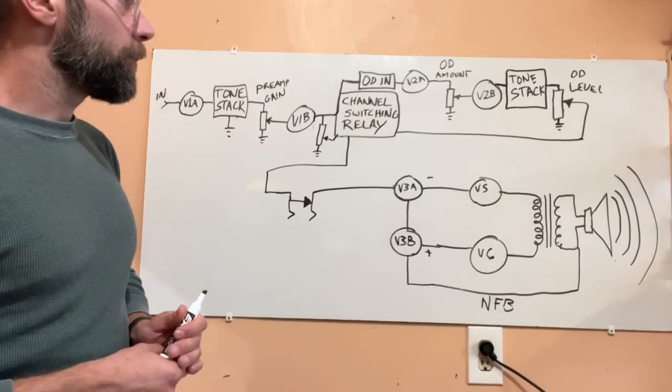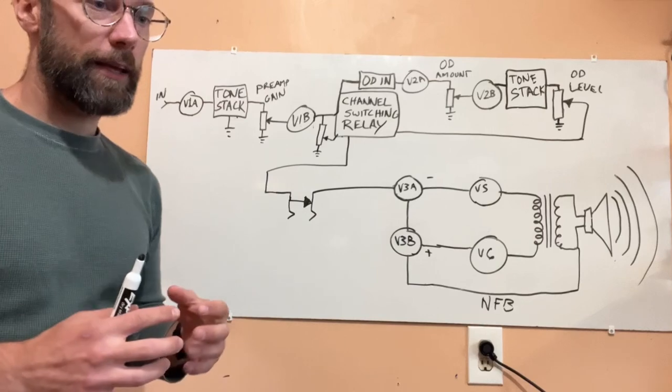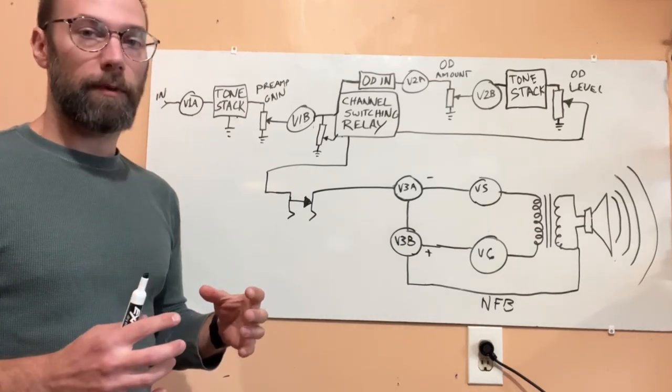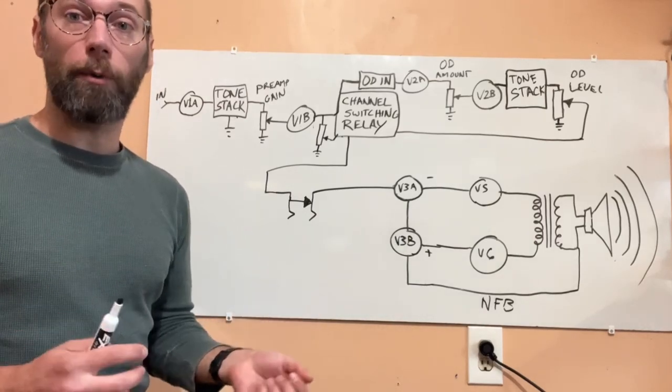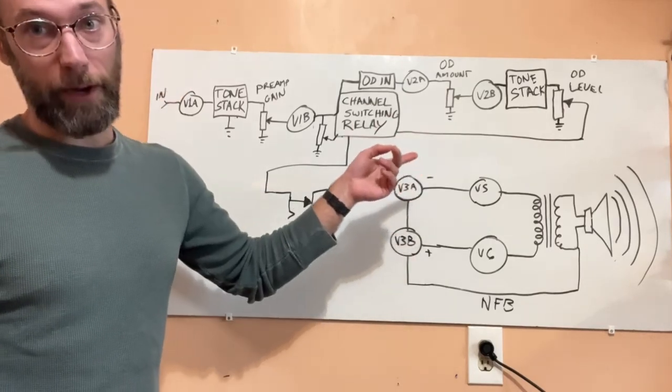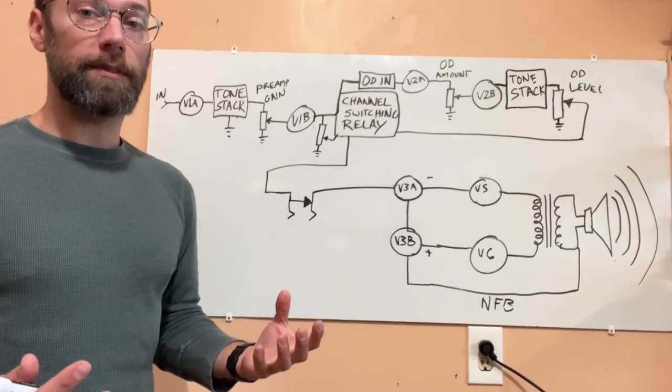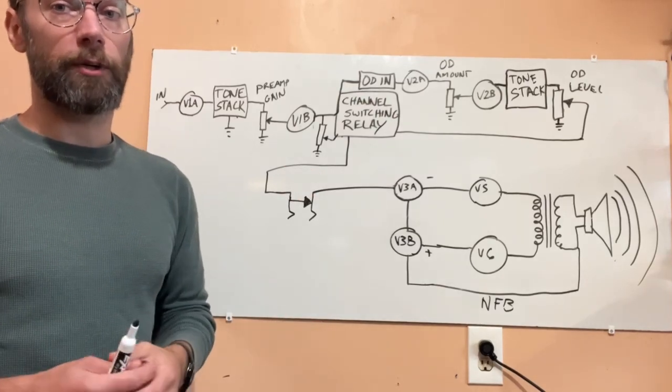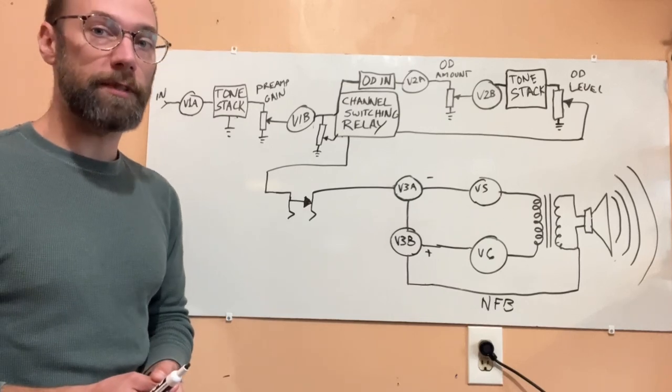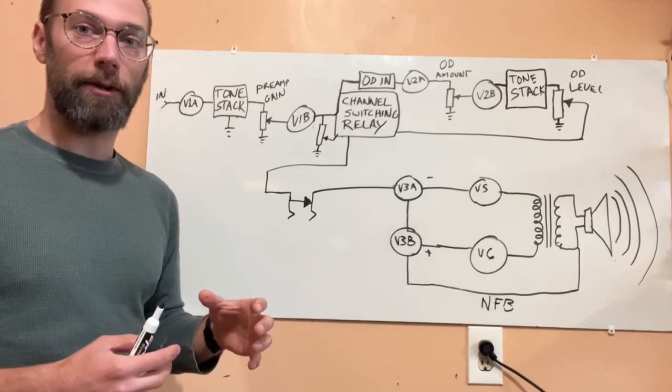But having that post OD filtering basically allows the overdrive to get a lot more gainy. If you want to go for high gain Marshall kind of sounds, this setup is going to get you there. The classic has a more open uncompressed overdrive sound. It's really good for low gain overdrive sounds, but as you push it into higher gain and more saturated tones for leads and stuff, it will be a little bit more rowdy and a little bit more loose or edgy.